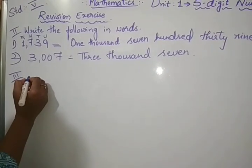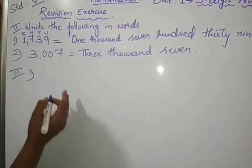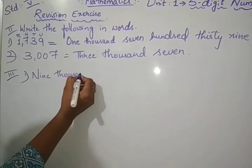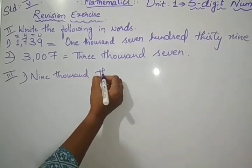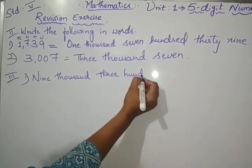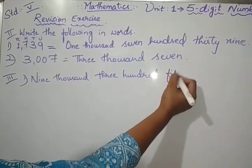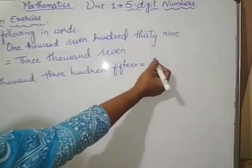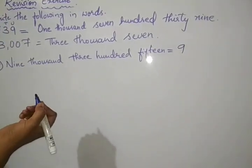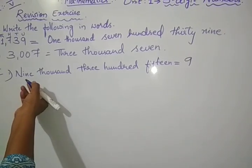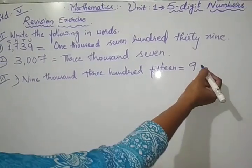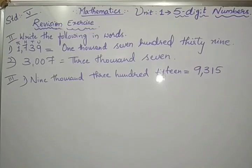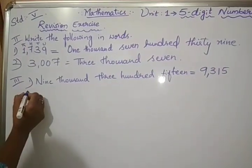That is write in figures. First one is given, 9,315. I am going to write only answer. How many thousands, 9,000. The number is in 1000th place, means it is 4-digit number, 9,315. Place after 3 digits, the comma, that is 9,315.